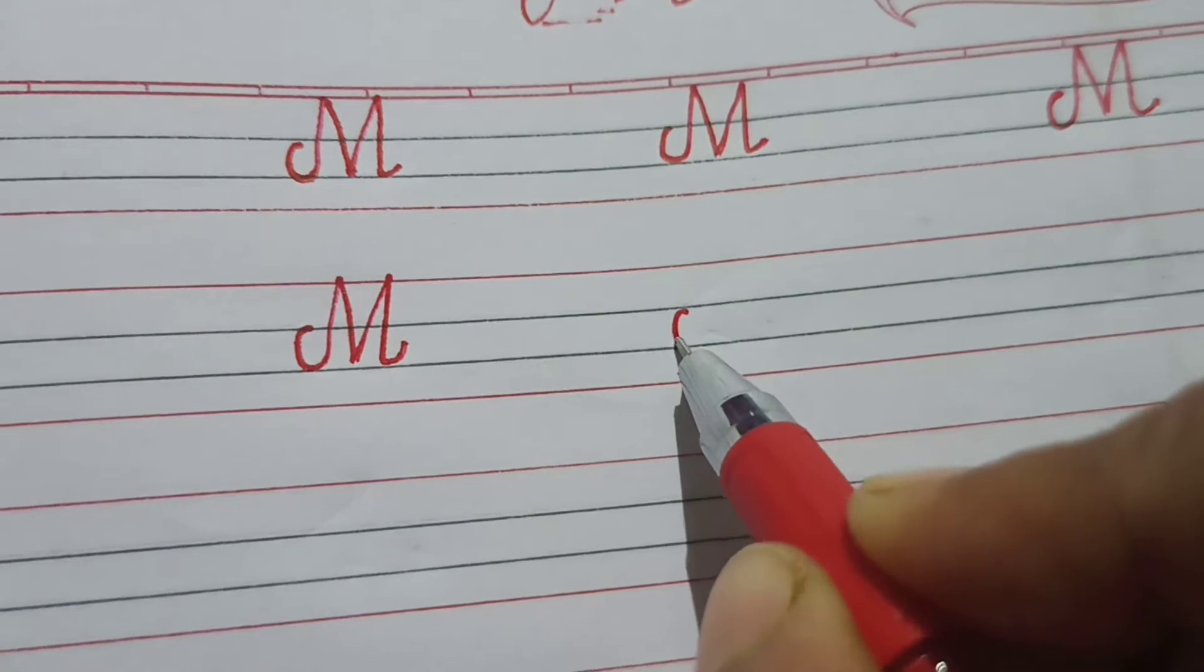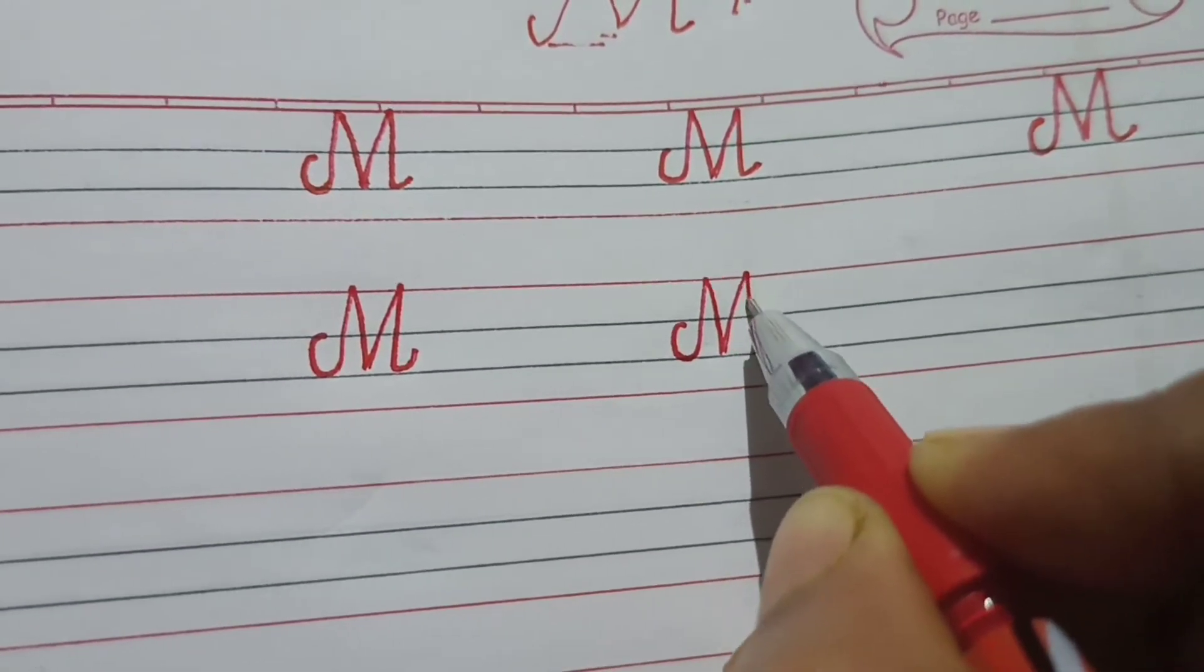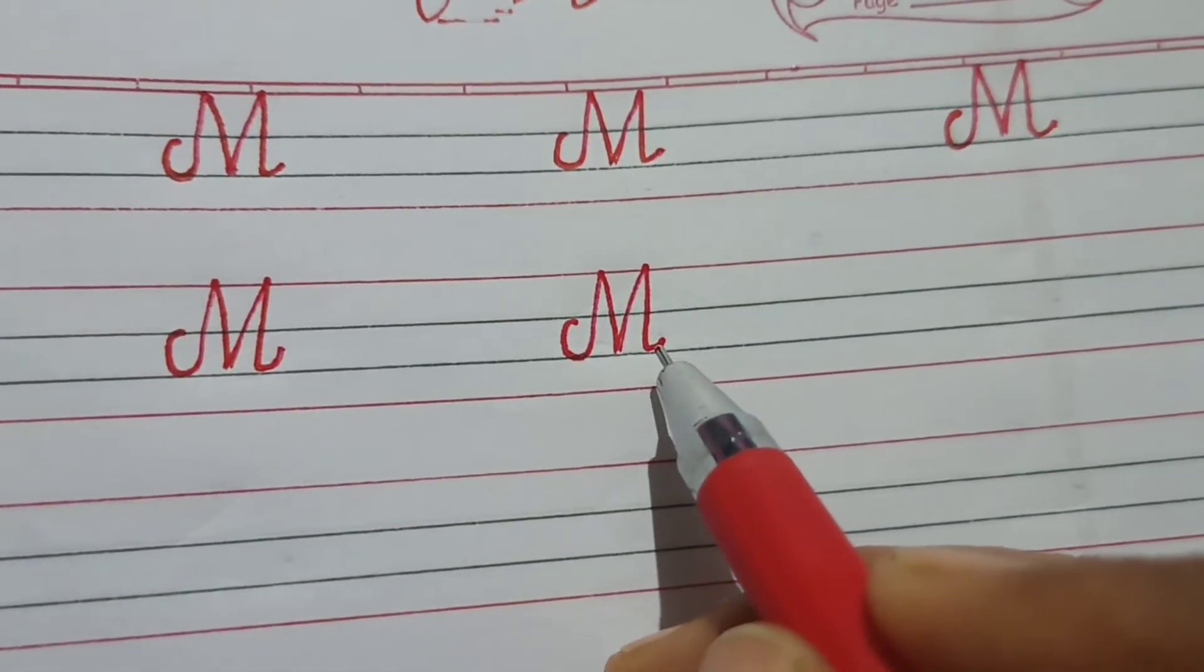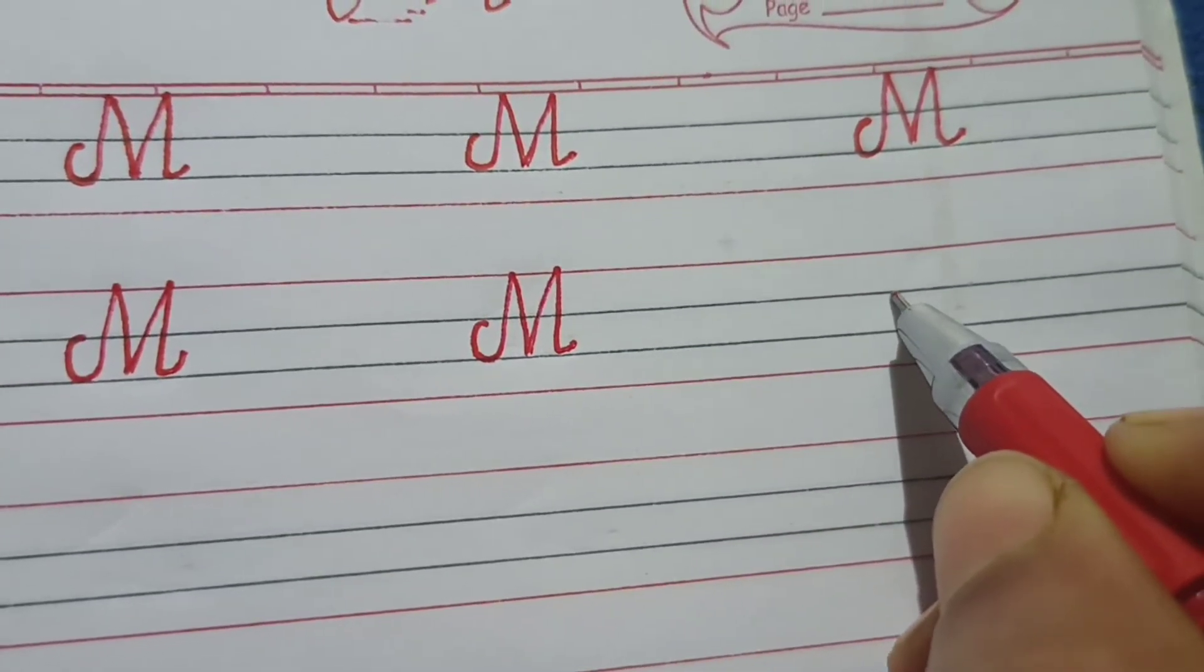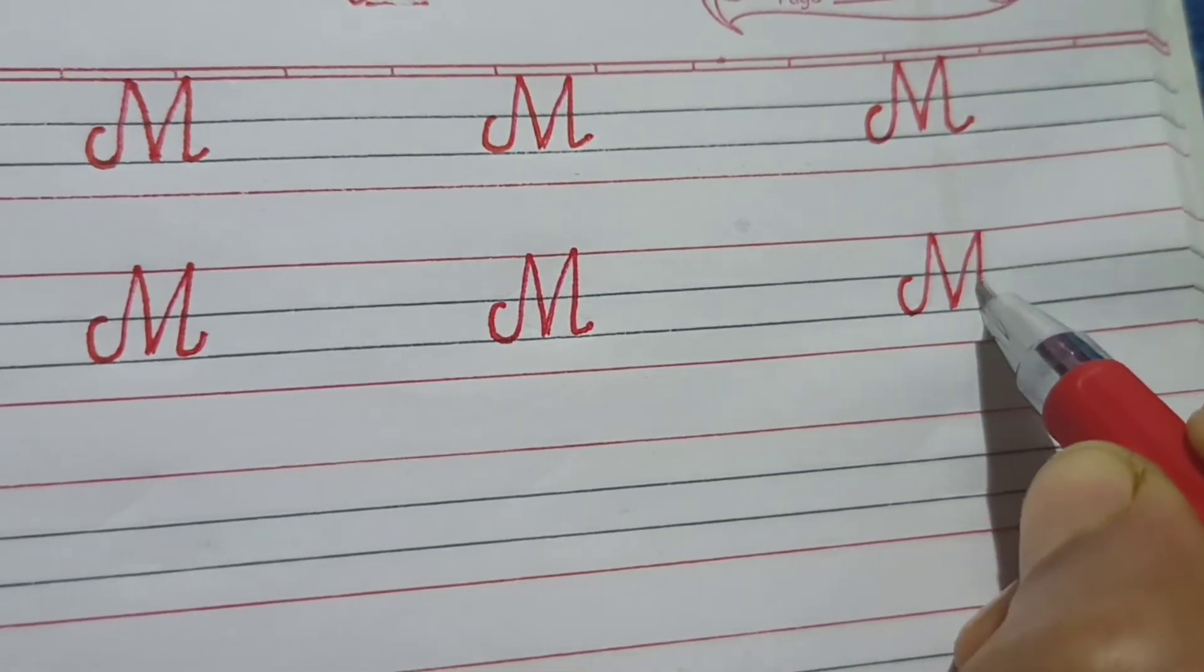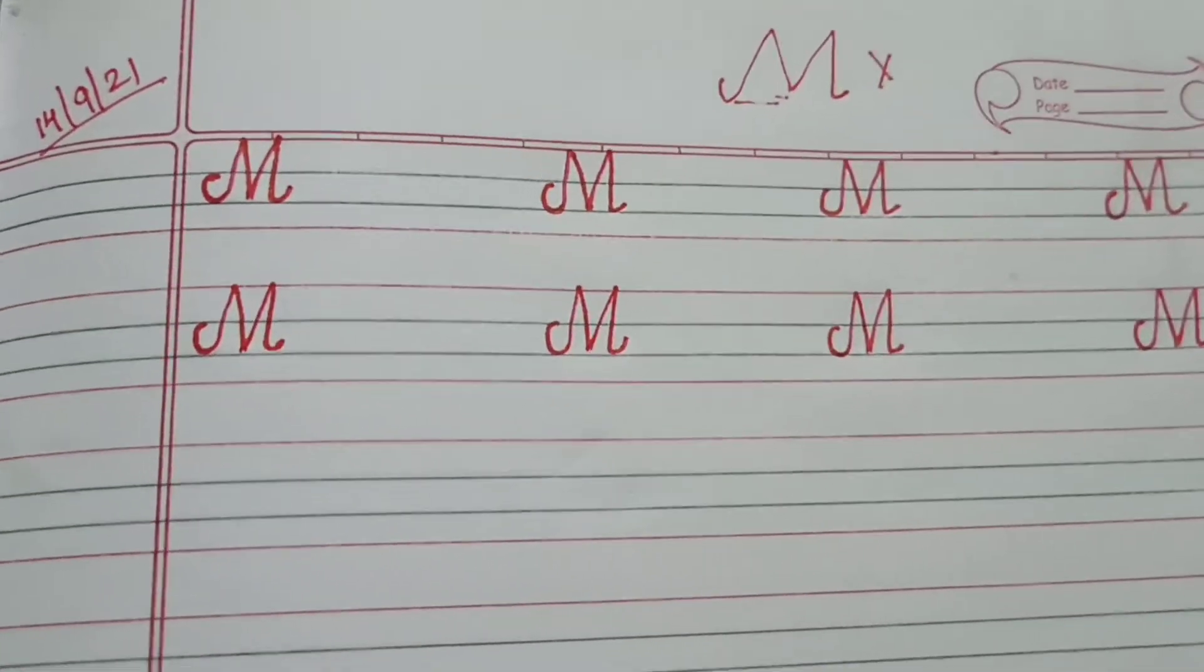It's very easy. So, you can practice it. M for mango. See the turning. M for mango. Okay.